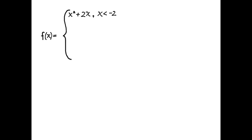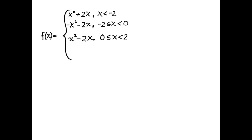Here's an experiment to help improve your understanding of critical points and inflection points. We're going to analyze a piecewise function defined as x squared plus 2x when x is less than negative 2, negative x squared minus 2x when negative 2 is less than or equal to x is less than 0, x squared minus 2x when 0 is less than or equal to x is less than 2, and 2x minus 4 when x is greater than or equal to 2. This function is defined on a domain of all real numbers.